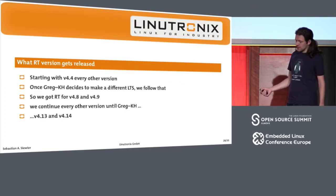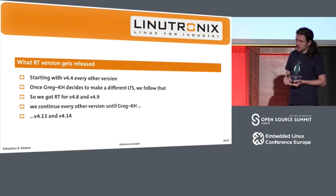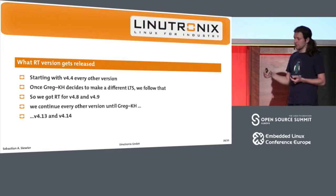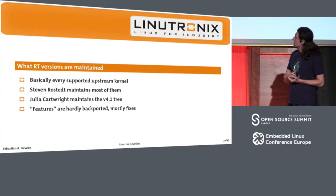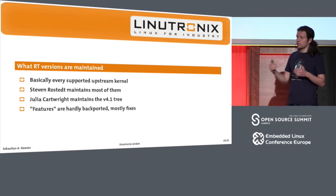One of the things we do since the funding of the RT Linux project, starting with 4.4, is we release every other kernel version, which mostly works. We also agreed to go for the stable and LTS releases. Usually we do every other version, but as we did with 4.8 and 4.9, we switched to 4.9 because it was the LTS kernel. The next 4.14 is going to be LTS because it has RTL on top of it. Most of the versions out there are maintained by Sven. Julia Cartwright agreed to maintain the 4.1 tree, which she is using.